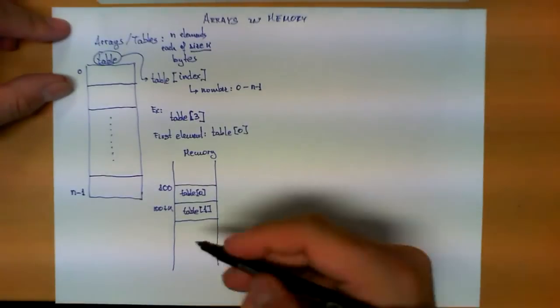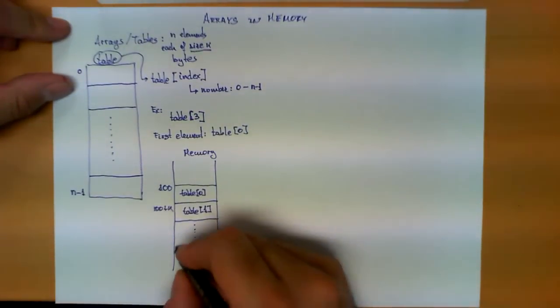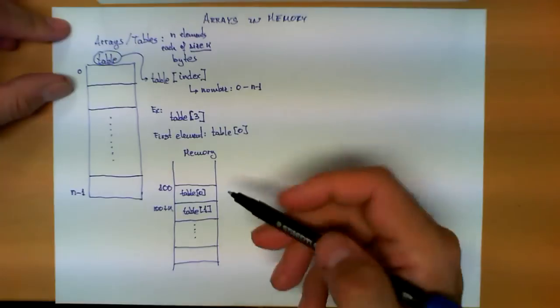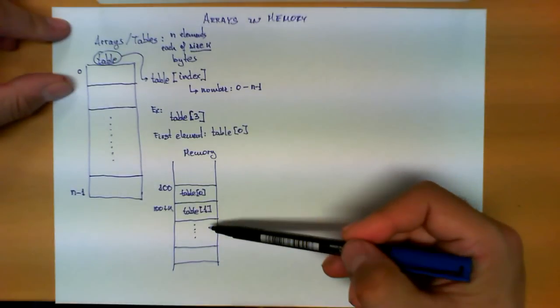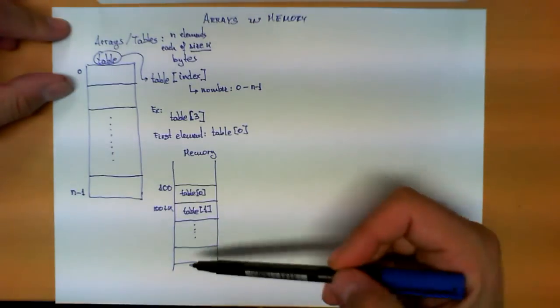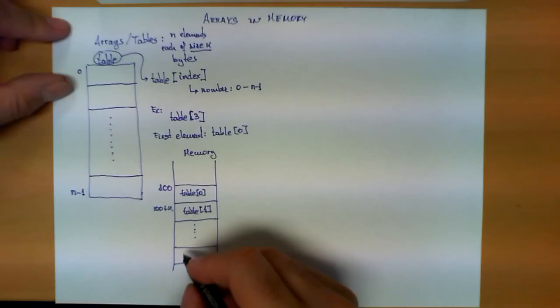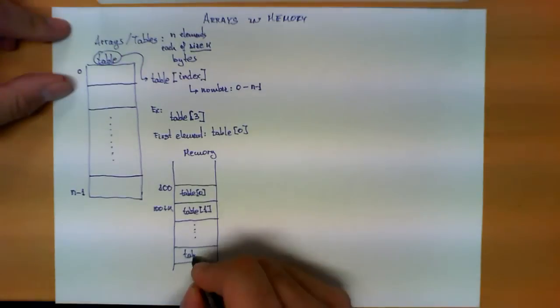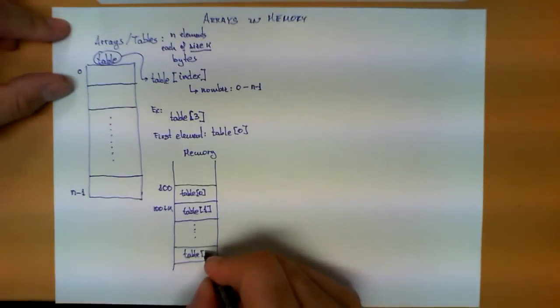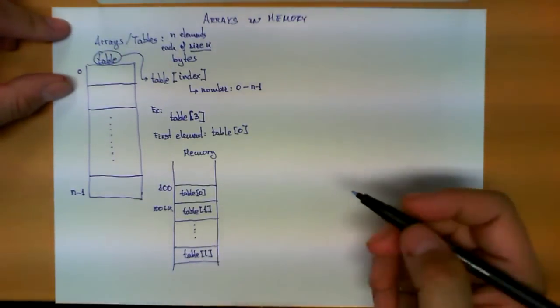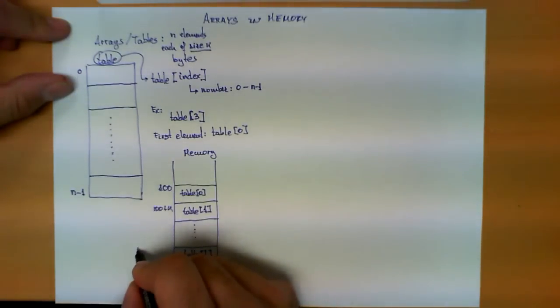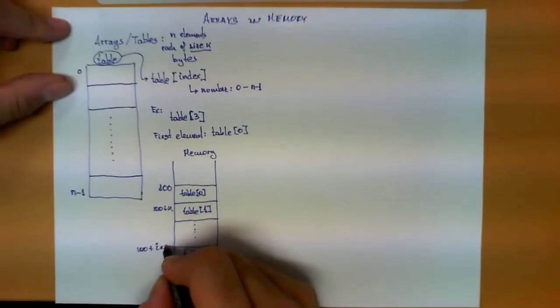As we can see, further elements down the table will be all stored in positions that we can obtain by adding k bytes to the previous one. In general, the element table of i, being i any number, will be stored at the position 100 plus i times k.